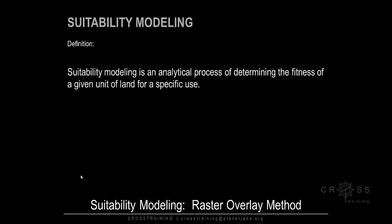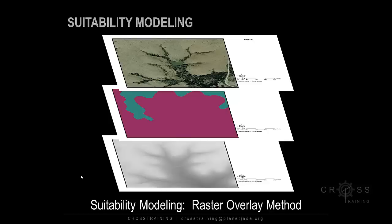Suitability modeling is an analytical process of determining the fitness of a given unit of land for a specific use. It begins first with the site inventory process, usually documented through spatial mapping. These spatial maps serve as individual layers containing critical factors used in an overlay type analysis to determine the most suitable or vulnerable areas for development.